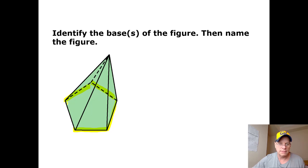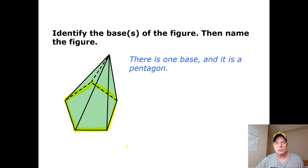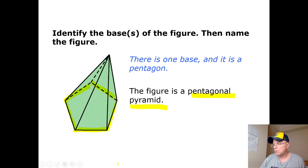This base has five sides, so we call a five-sided shape a pentagon. So this is a pentagonal pyramid. And we're going to consider this shape number, a polyhedron number two, if you want to label it on your notes.